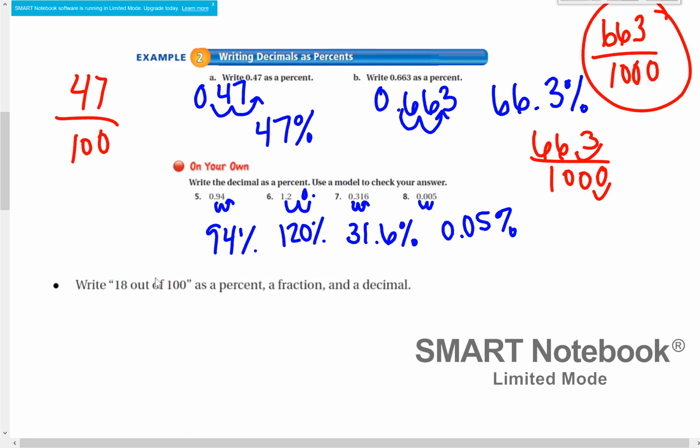For this example down here, we want to write 18 out of 100 as a percent, fraction, and decimal. I like starting with the fraction, because 18 out of 100 is easy to write as a fraction, 18 over 100. However, they are both even, so we can simplify by dividing by 2 to the top and bottom. We would get 9 fifths. So that's our fraction.